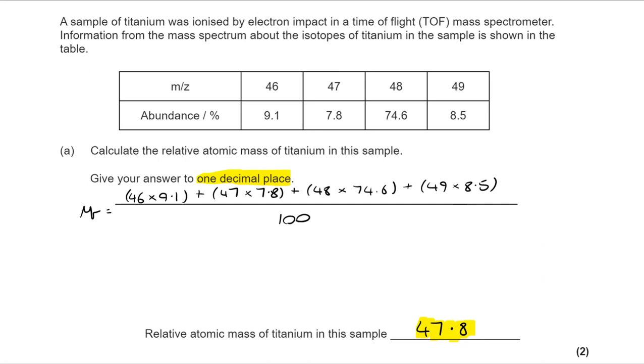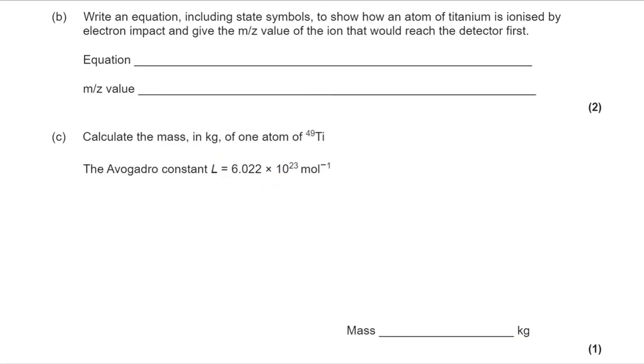It's to one decimal place. You don't want to lose a mark after doing all of the hard work and then missing out because you've just not paid attention to the detail. Moving on to B.